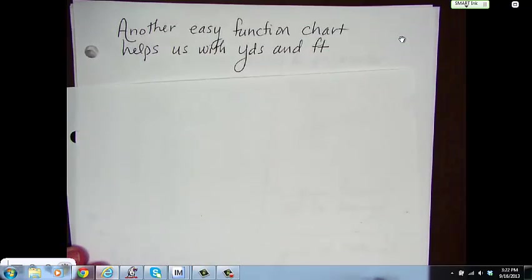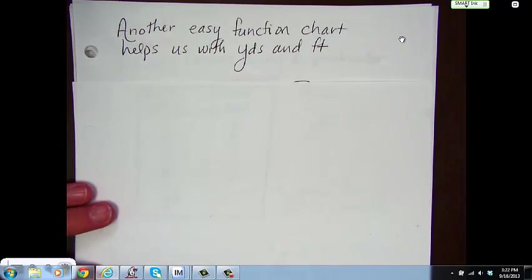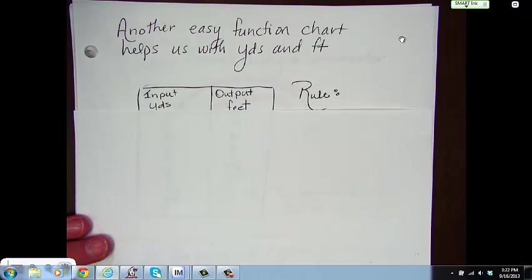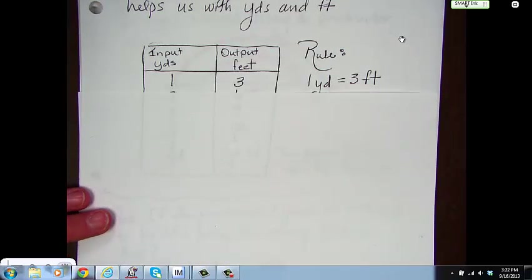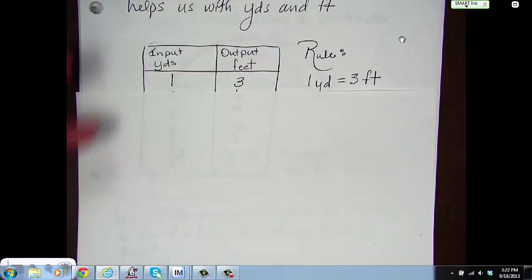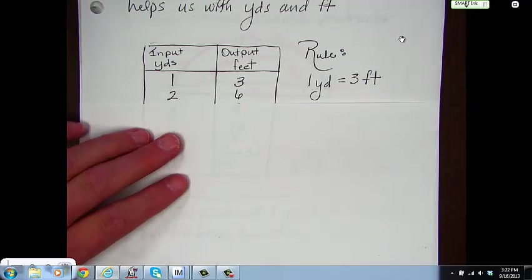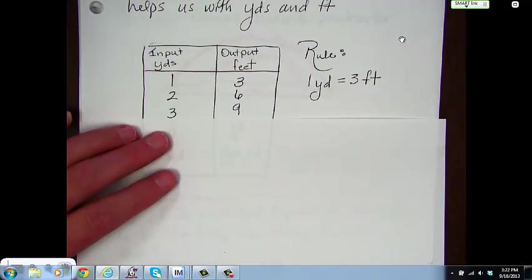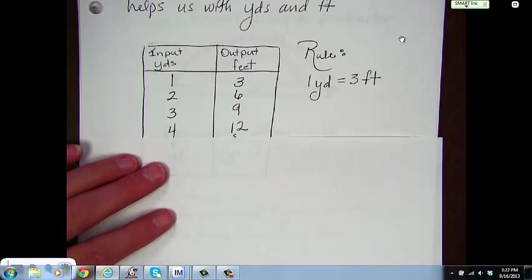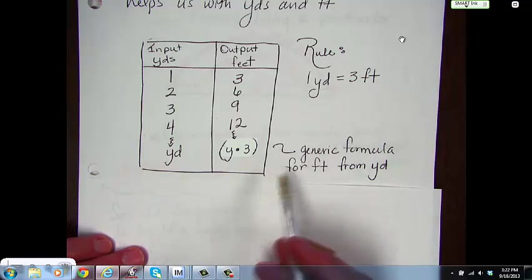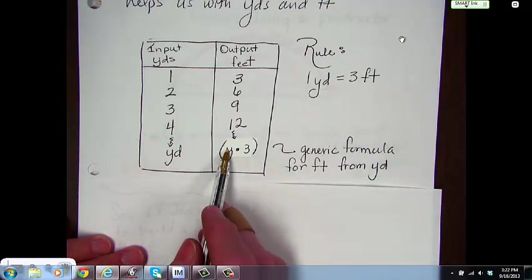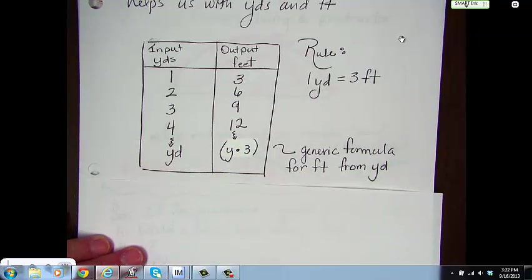So, if you're interested in the medical field, this is going to be something that eventually you're going to have to learn how to do that conversion. Okay, another easy chart that we can use with function is yards to feet. Input, yards, output, feet. So, it goes in as yards, and it comes out as feet. The rule is one yard, three feet. So, one yard, three feet. Two yards, six feet. Three yards, nine feet. Four yards, twelve feet. Et cetera. The generic formula for feet to yards is yards times three will give you feet.